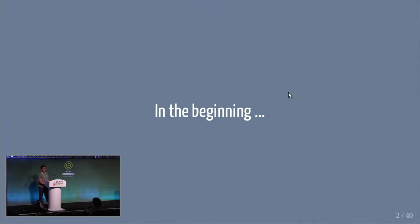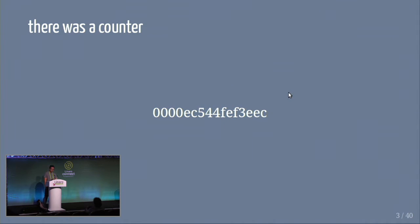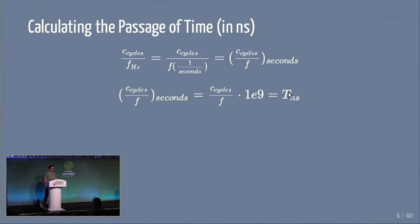In the beginning, there was a counter, and the counter incremented. In this example it just keeps counting up. Sometimes there are counters that count down, and this is basically what you get when you have to do timekeeping in hardware — you have something that's counting. If you have a counter, you get to calculate the passage of time. It's just some math: you take the cycles and divide by the frequency of the counter, and then figure out how many seconds or nanoseconds you want.